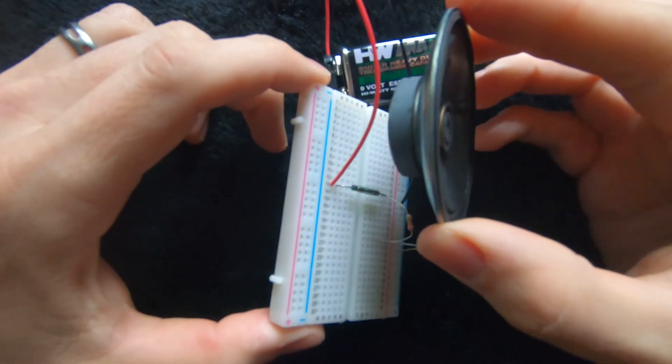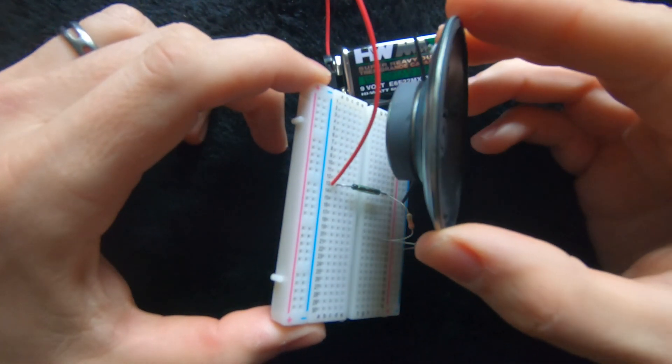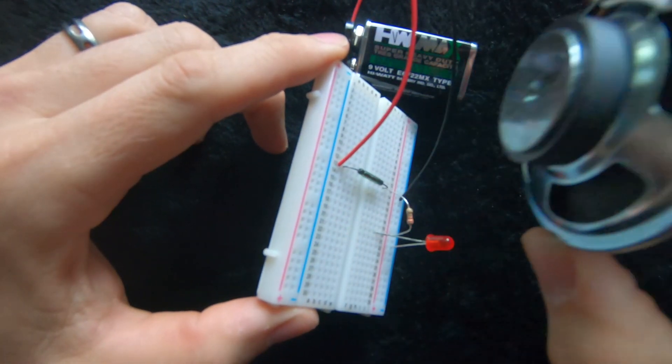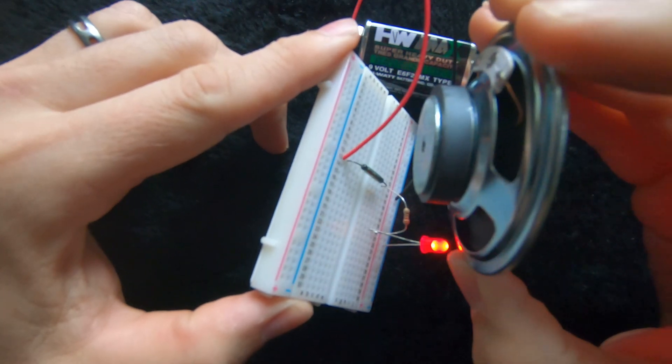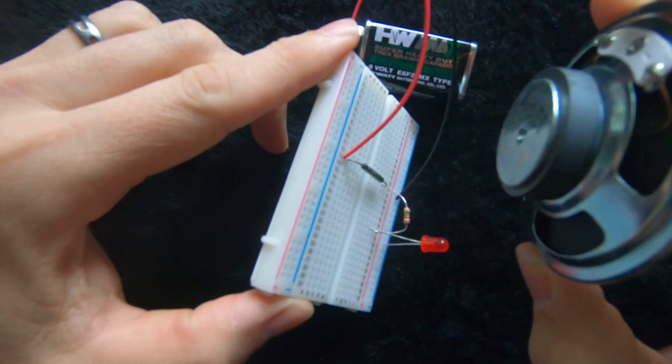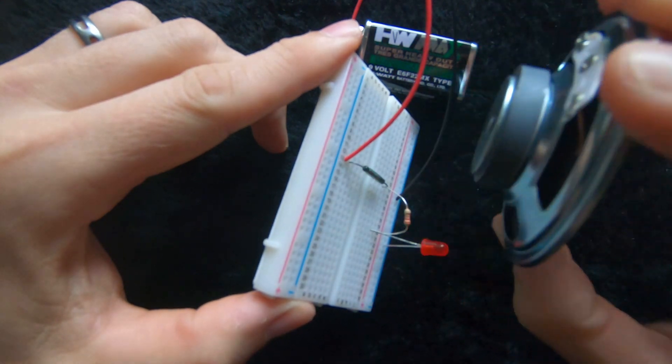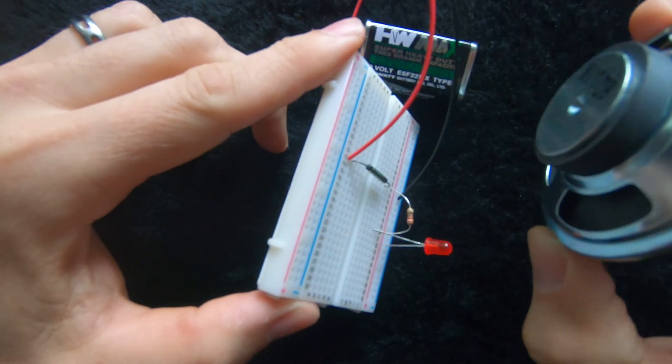So if I bring this speaker towards the reed switch, you can see there's quite a distance between these. If I get it in the right position, you see how the light comes on when I get close to it. That's quite a distance away from it. But an incredibly useful component. If you listen really carefully you can actually hear it clicking.